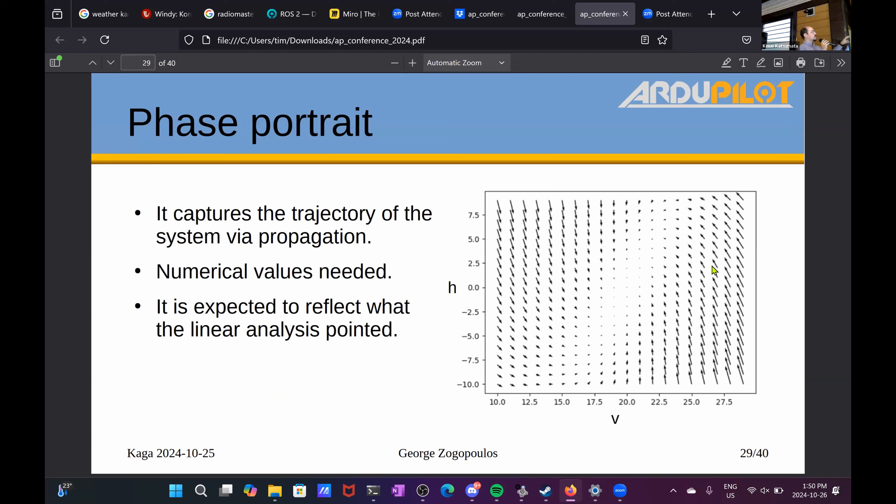To draw such a phase portrait on a diagram, you need numerical values essentially. So you do need to have some sort of an idea of a system at hand and replace variables with numbers. But it is also expected to reflect what the linear analysis pointed, at least locally. If your linear analysis said that the origin is stable, you would expect the nonlinear phase portrait to behave quasi-stably in a neighborhood around the origin.